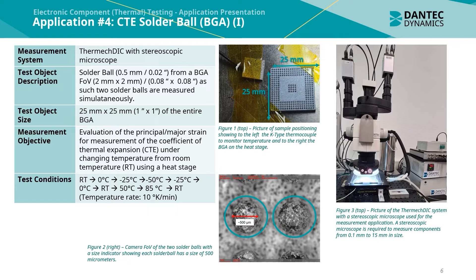Figure 1 shows sample positioning with a K-type thermocouple to monitor temperature and the ball grid array on the heat stage. Figure 2 shows the camera field of view of two solder balls, each approximately 500 µm in size. Figure 3 shows the thermic DIC system together with a stereoscopic microscope including two cameras. A stereoscopic microscope is required to measure components from 0.1mm to 15mm in size. Also visible are the heat stage, liquid nitrogen tank, nitrogen tank controller, heat stage controller, and the data acquisition controller to synchronize measurements between the DIC system and the heat stage controller.